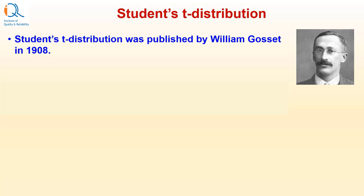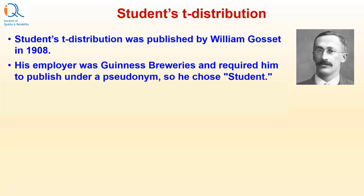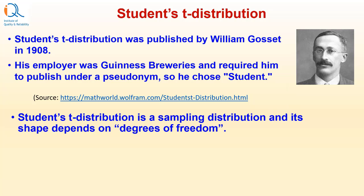Student's T distribution was published by William Gossett in 1908. His employer was Guinness Breweries and the employer required him to publish under pseudonym and therefore he chose the name Student. Student's T distribution is a sampling distribution and its shape depends on degrees of freedom.